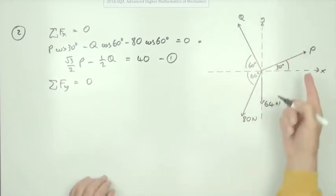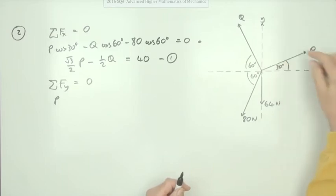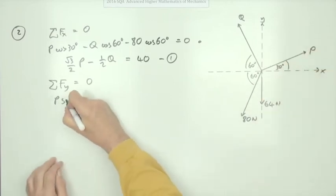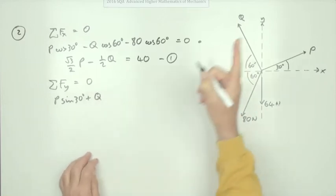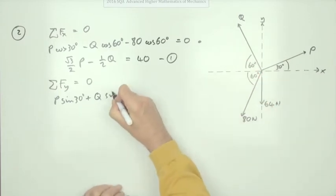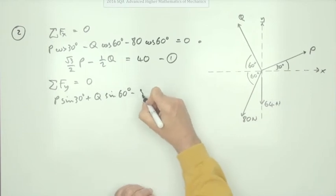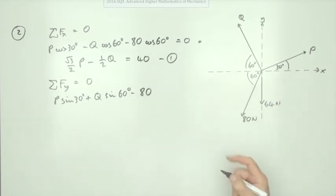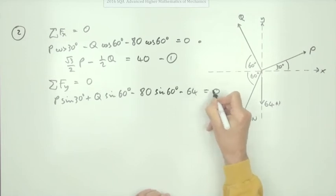P and Q are both going that way, so I'll just start with P. Not all of P, just this part of it, which is the sin of 30. Q's going that way, not all of Q, just this part of it, that's the sin of 60. 80's going against it, not all of it, just this part of it, which is the sin of 60. But all of this one's going against it, so minus 64 equals zero.